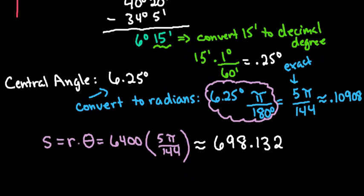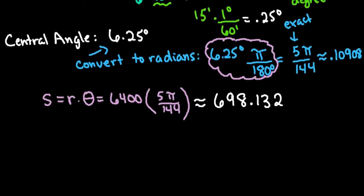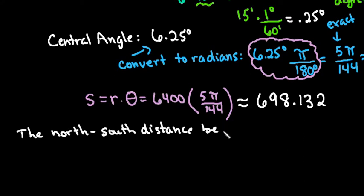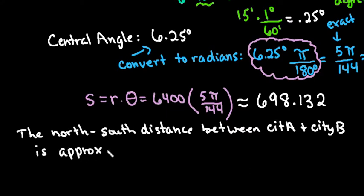And since if I go back to the problem, it says to round the nearest kilometer, we can say that the north-south distance between city A and city B is approximately 698 kilometers.